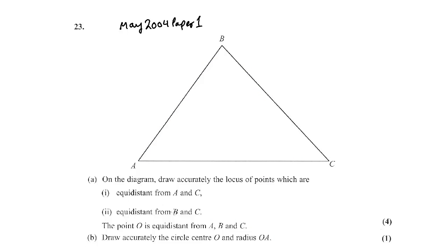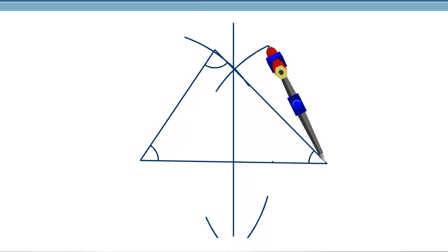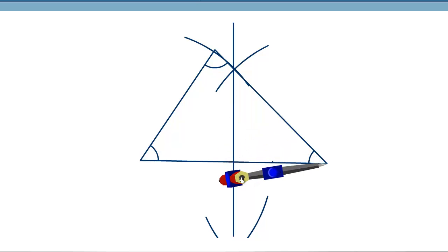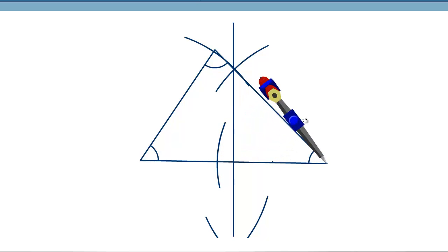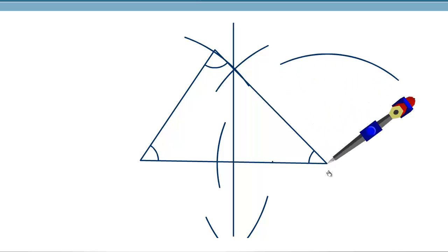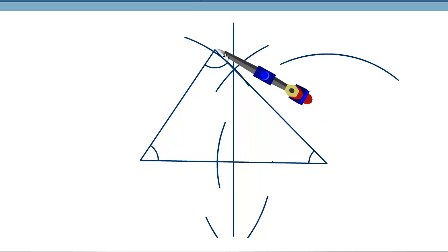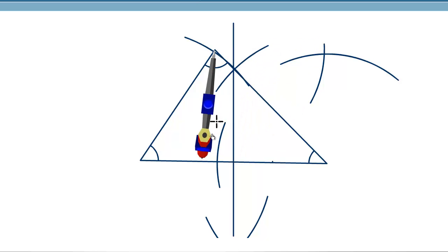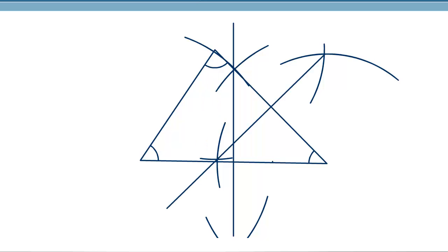The next part is equidistant from B and C, so we construct the perpendicular bisector of BC. We put the compass at B, take more than half the line length, and draw arcs above and below. Then we move the compass to C and draw two more arcs. Finally, we take the ruler and join the intersection points.